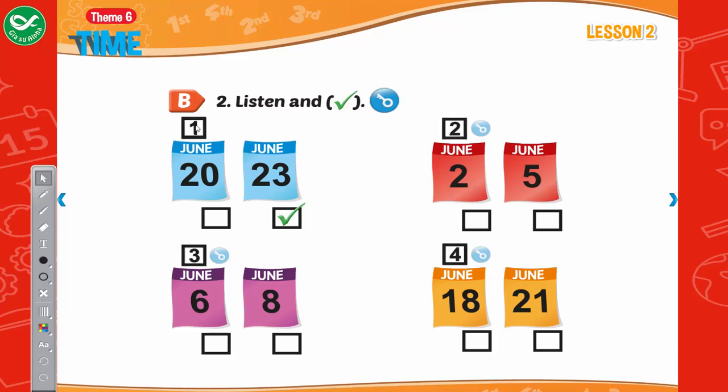Look at the pictures. Listen, there is one example. One: When's the next band practice? It's on June 23rd. Can you see the tick? This is an example. Now listen and tick the box.